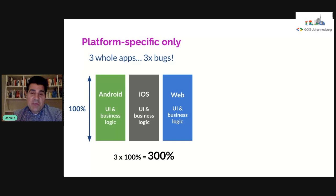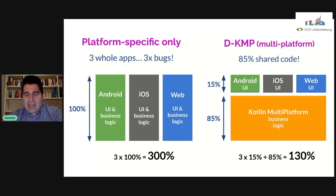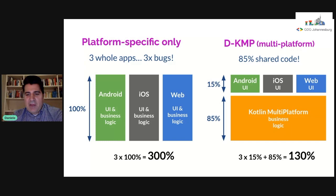Hopefully, with the new technology coming up this year especially, we can do something much better. With the DKMP architecture, which I'm going to talk about in the next 45 minutes, we are able to share 85% of our business logic thanks to Kotlin Multiplatform. The platform-specific code is just the UI code. In terms of effort, it's roughly even half compared to building three whole apps targeting these three platforms.